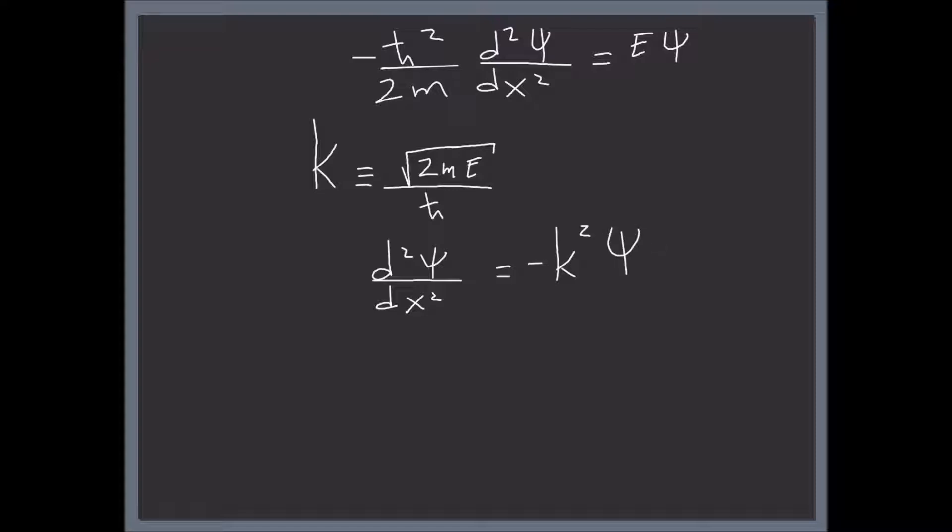If you remember from physics 1, this is the simple harmonic oscillator equation. And its solution, psi of x, is given by sines and cosines: A, some constant A times sine of Kx, plus B times cosine of Kx.